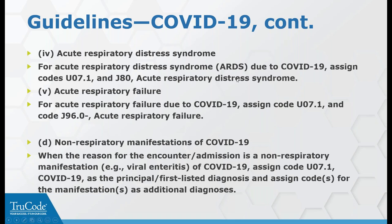For ARDS associated with COVID-19, code U07.1 and J80. Early in the pandemic COVID was thought to cause pneumonia, but many patients were actually going into ARDS, explaining why many were on the ventilator for extended periods with high fatality rates. ARDS is a very serious condition that often leads to death. For acute respiratory failure, use J96.0 codes as secondary diagnoses. For non-respiratory manifestations, use U07.1 and then assign whatever manifestations the doctor has documented as additional diagnoses.